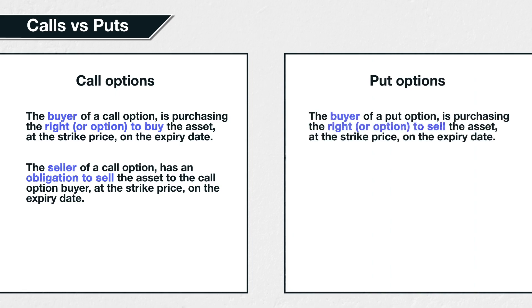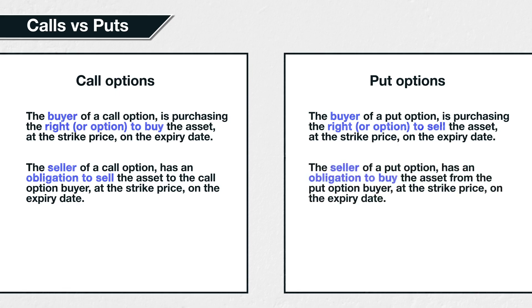The buyer of a put option is purchasing the right to sell the asset at the strike price on the expiry date. On the other side of this trade is the trader who is selling this put option to the buyer. The seller of the put option has an obligation to buy the asset from the put option buyer at the strike price on the expiry date.